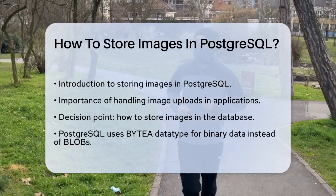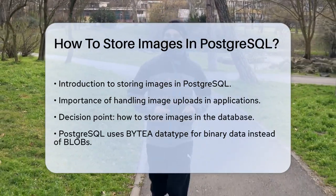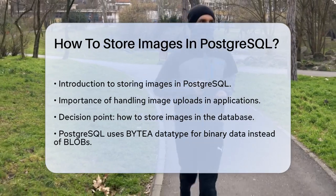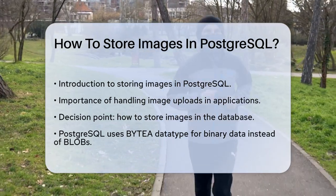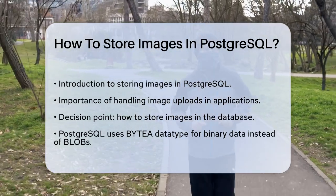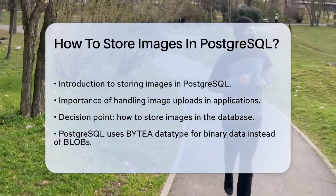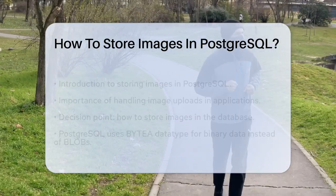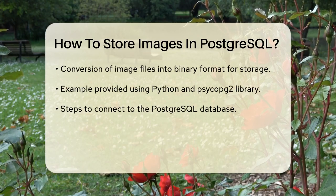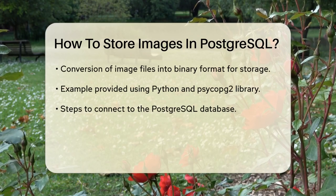To store an image using ByteA, you convert the image file into a binary format. For example, if you're using Python, you can use the psycopg2 library to interact with your PostgreSQL database. You would read the image file, convert it into a binary string, and then insert it into your database table.